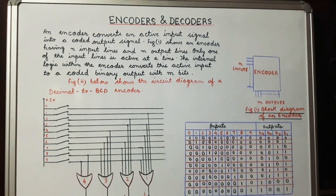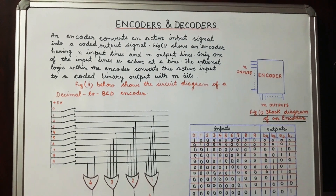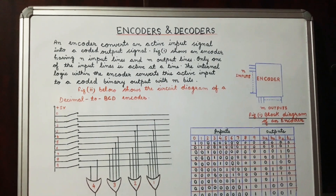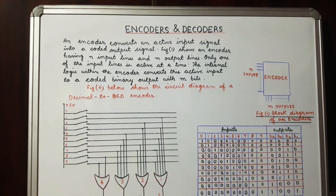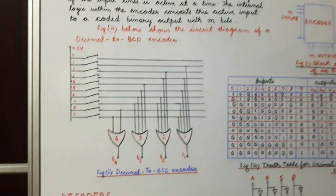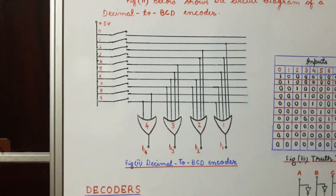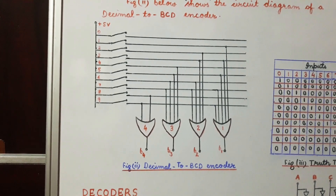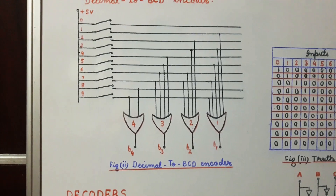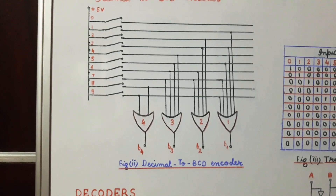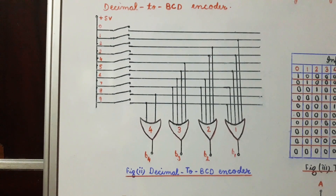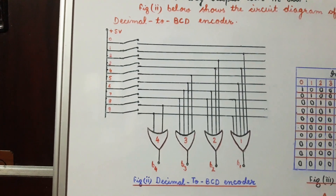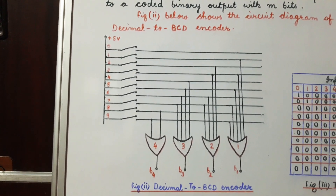One of the most commonly used input devices for a digital system is a set of ten switches, one for each numeral. These switches generate 1 or 0 logic levels in response to turning them on or off. When we feed a particular number to the digital circuit in BCD — that is, binary coded decimal — the switch corresponding to that number is pressed. There is an IC available in the encoder to perform this function. The figure below shows the circuit diagram of a decimal to BCD encoder.